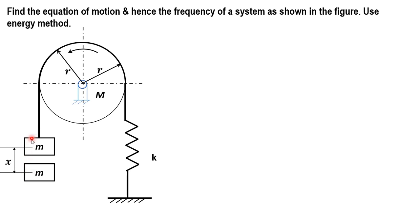There will be a linear kinetic energy of this particular mass. Due to the rotation of this drum there will be oscillations of the drum, and there will be a rotational kinetic energy of the disc of mass capital M. There will also be elongation and contraction of the spring, so there will be strain energy stored in the spring whose stiffness is k. So there are three types of energies: linear kinetic energy of mass m, rotational kinetic energy of the disc of mass M, and strain energy in the spring.